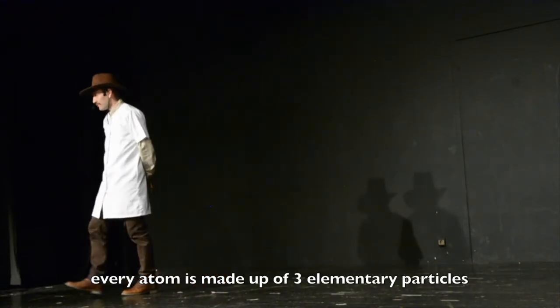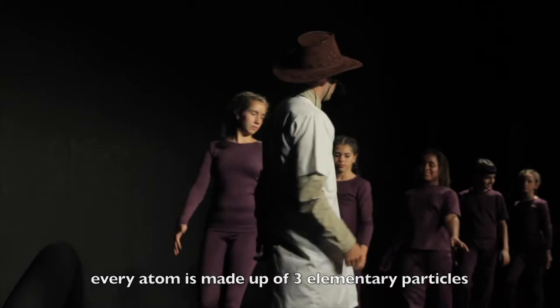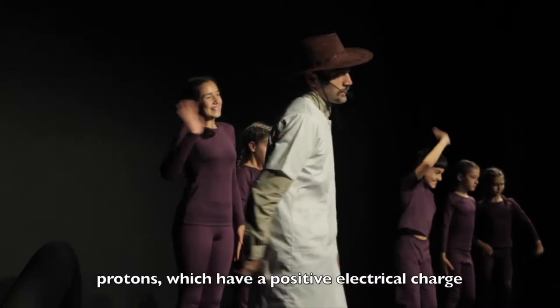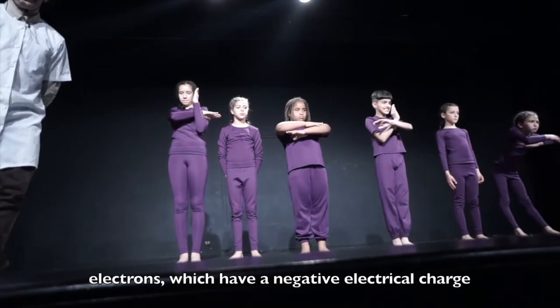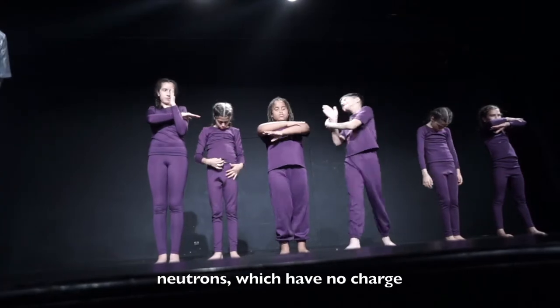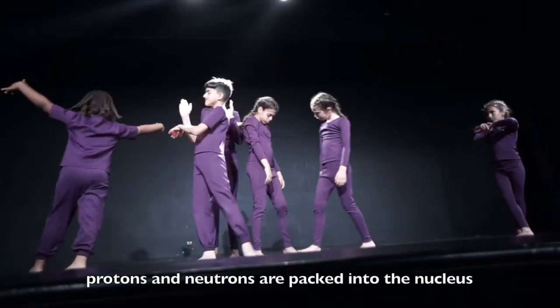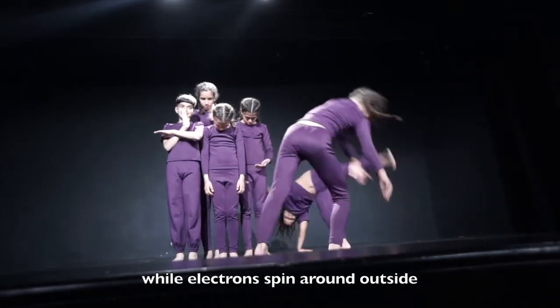The atom is made up of three elementary particles: protons, which have a positive electrical charge; electrons, which have a negative electrical charge; and neutrons, which have no charge. Protons and neutrons are packed into the nucleus while electrons spin around outside.